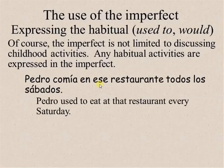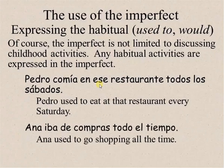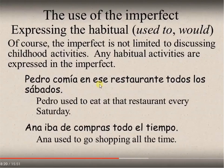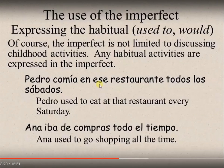Pedro comía en este restaurante todos los sábados — probably he doesn't do that anymore, but he used to. Ana iba de compras todo el tiempo — something she used to do but maybe doesn't anymore. When expressing something you used to do in the past, certain words serve as clues: todos los días (every day), siempre (always), nunca (never), cada mañana (every morning), cada tarde, cada semana. These adverbs of frequency indicate a past habit, so you need to use the imperfect.